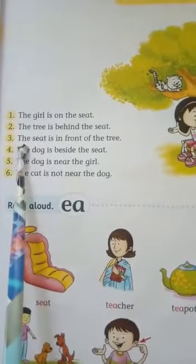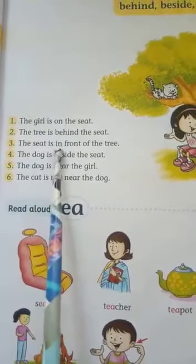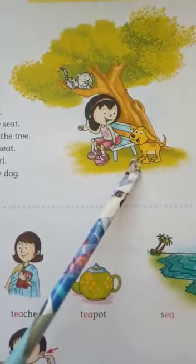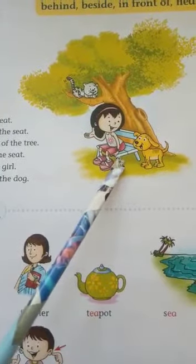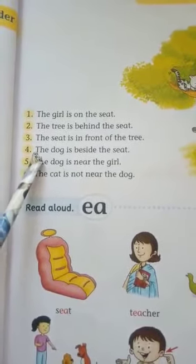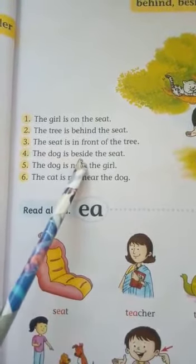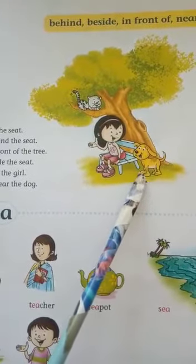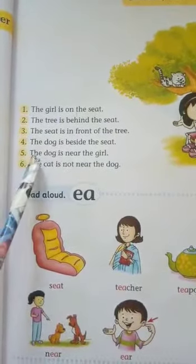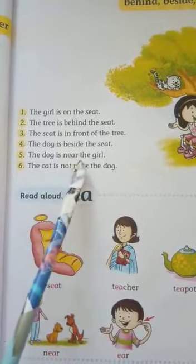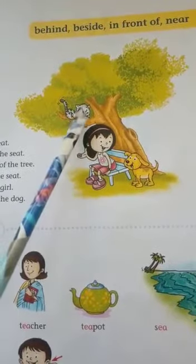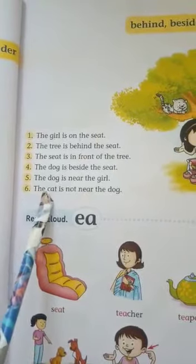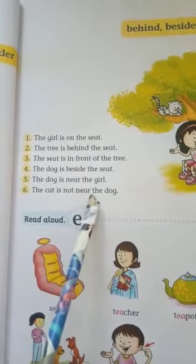Now we read the sentence: the dog is beside the seat. Now where is the dog? The dog is near the girl. Where is the cat? The cat is not near the dog. We read the sentence: the cat is not near the dog.